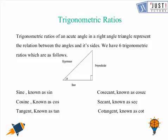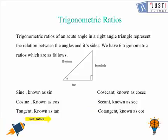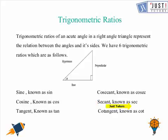Trigonometric ratios of an acute angle in a right angled triangle represent the relation between the angles and its sides. We have six trigonometric ratios: the first one is sine, then cosine known as cos, tangent known as tan, cosecant known as cosec, secant known as sec, and cotangent known as cot.